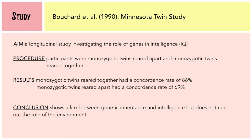The last study is by Bouchard et al. in 1990, also called the Minnesota Twin Study. It was a longitudinal study that investigated the role of genes in intelligence. The sample included monozygotic twins reared together and monozygotic twins reared apart. Since monozygotic twins share 100% of genes, if twins reared together have a high concordance rate this shows the likelihood of the environment playing a role in intelligence, while if twins reared apart have a high concordance rate this shows the likelihood of genetics playing a role.